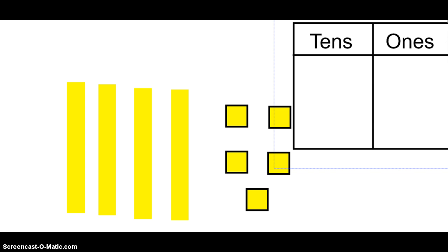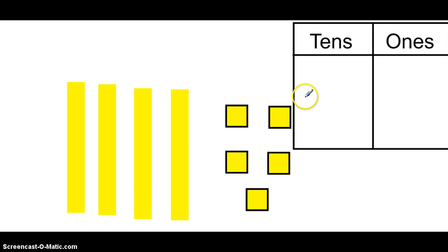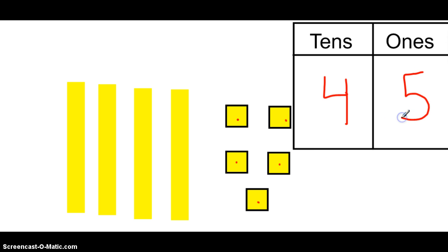What number is represented here? Well, let's check it out. I have four tens and five ones — I have the number 45.